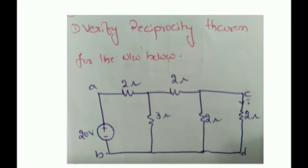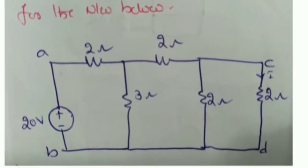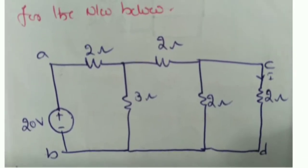Coming to the examples. Verify the Reciprocity Theorem for the network below. There is a 20V voltage source given, 2Ω and 2Ω are the series branch elements, and 3Ω, 2Ω, and 2Ω are the shunt branch elements. You need to calculate, by means of the 20V voltage source, the current flowing in the CD branch — specifically the 2Ω branch current.